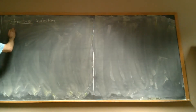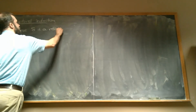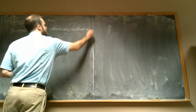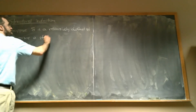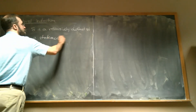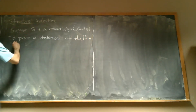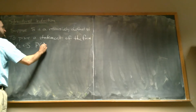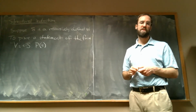Here's how it works. Suppose S is a recursively defined set, and we want to prove a statement of the form: for all little s in big S, P(s). So we want to prove that this property P holds for every element of our set S.